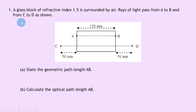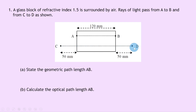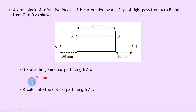Question one for optical path difference says that a glass block of refractive index 1.5 is surrounded by air. Rays of light pass from A to B and from C to D as shown. The ray from A to B goes purely through the glass block, while the ray from C to D involves traveling through air, then the glass block, then air again. Part A says to state the geometric path length AB, which is simply the distance traveled — 120 millimeters.